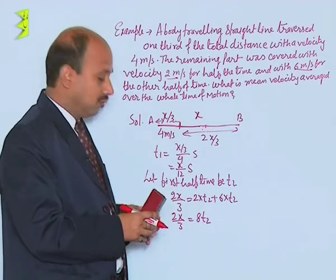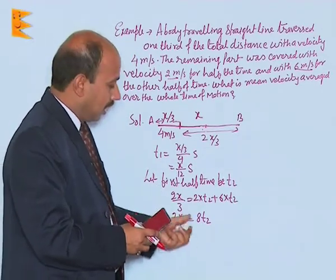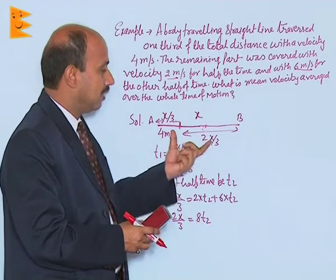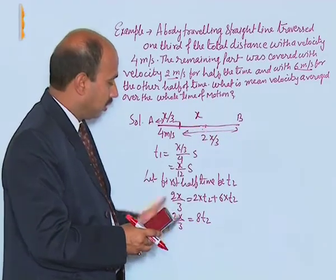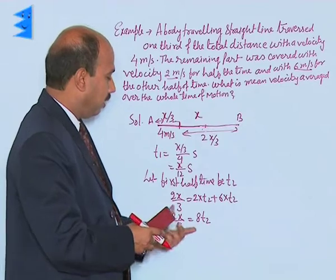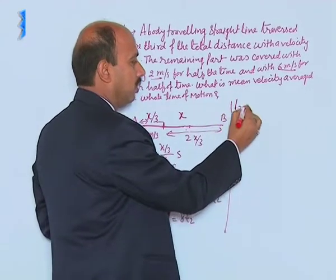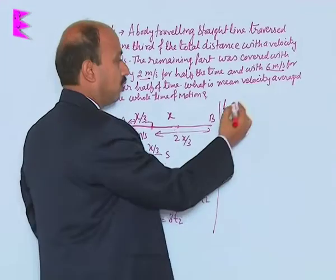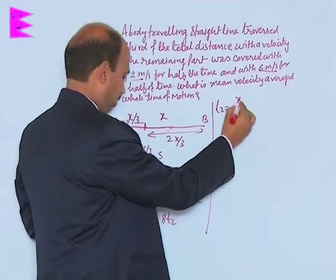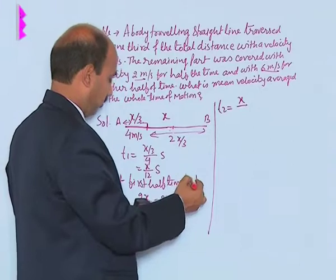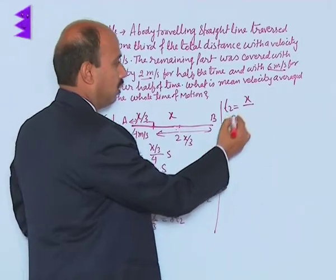So this is the total distance you have taken, and this is the total distance traveled in the total time here, the remaining part. And now you can solve here, we can get here t2 is equal to x upon, this is 12.